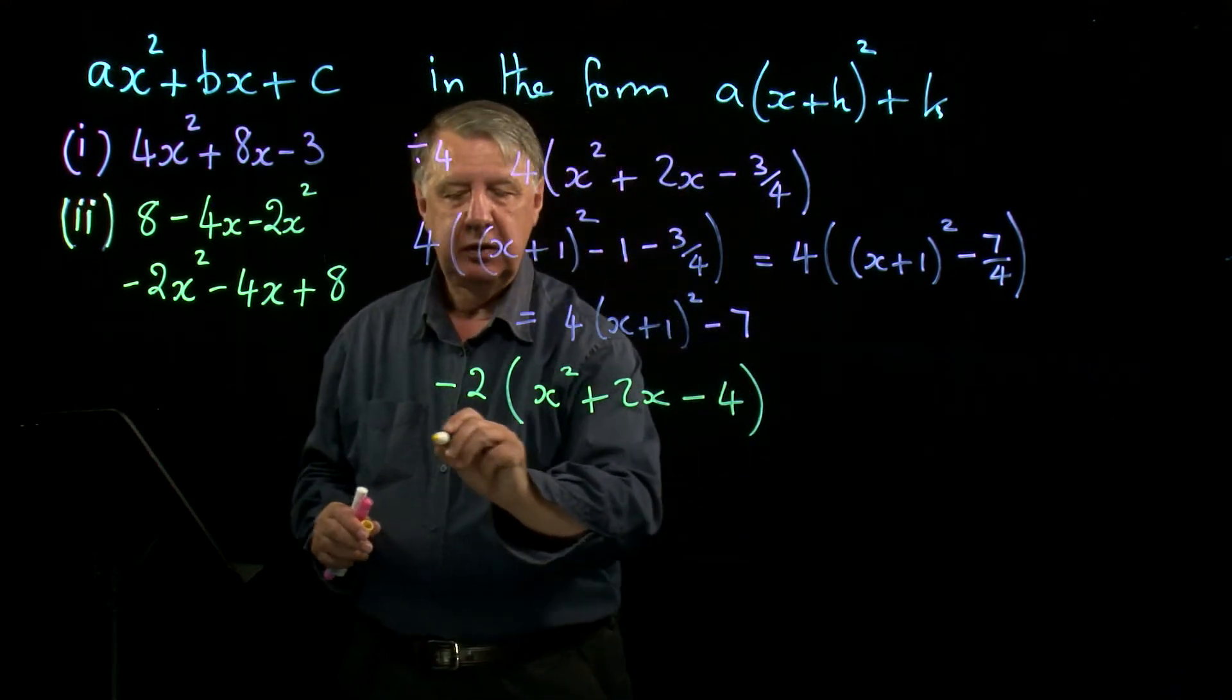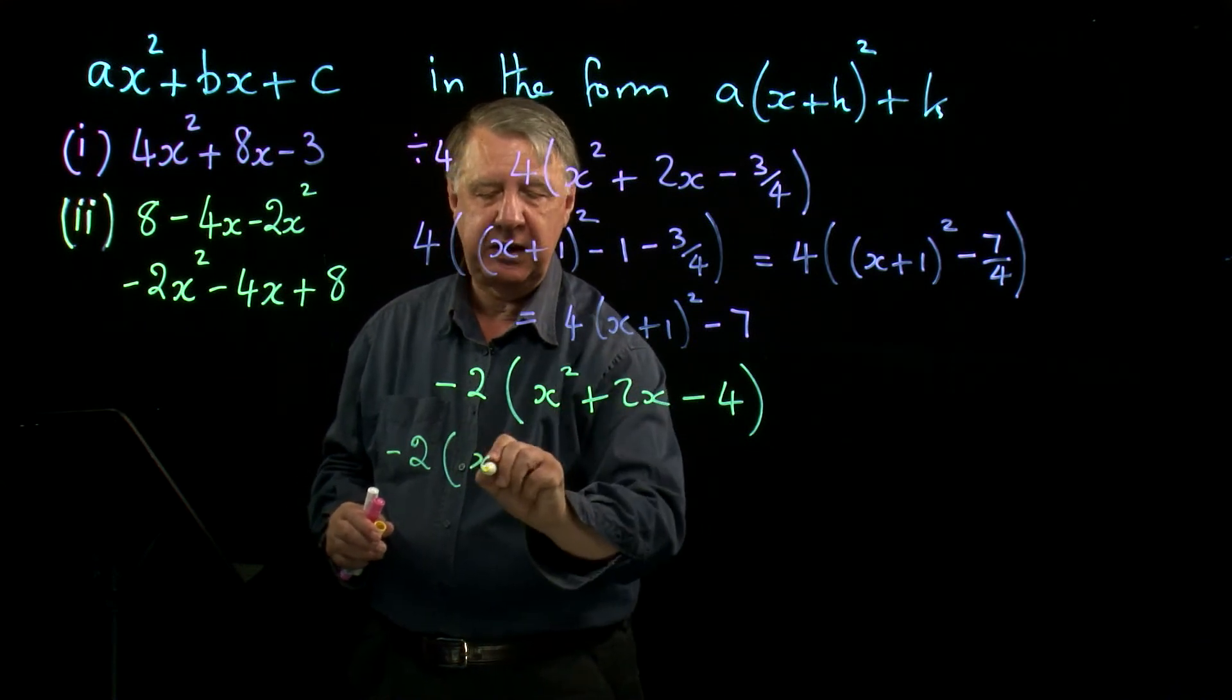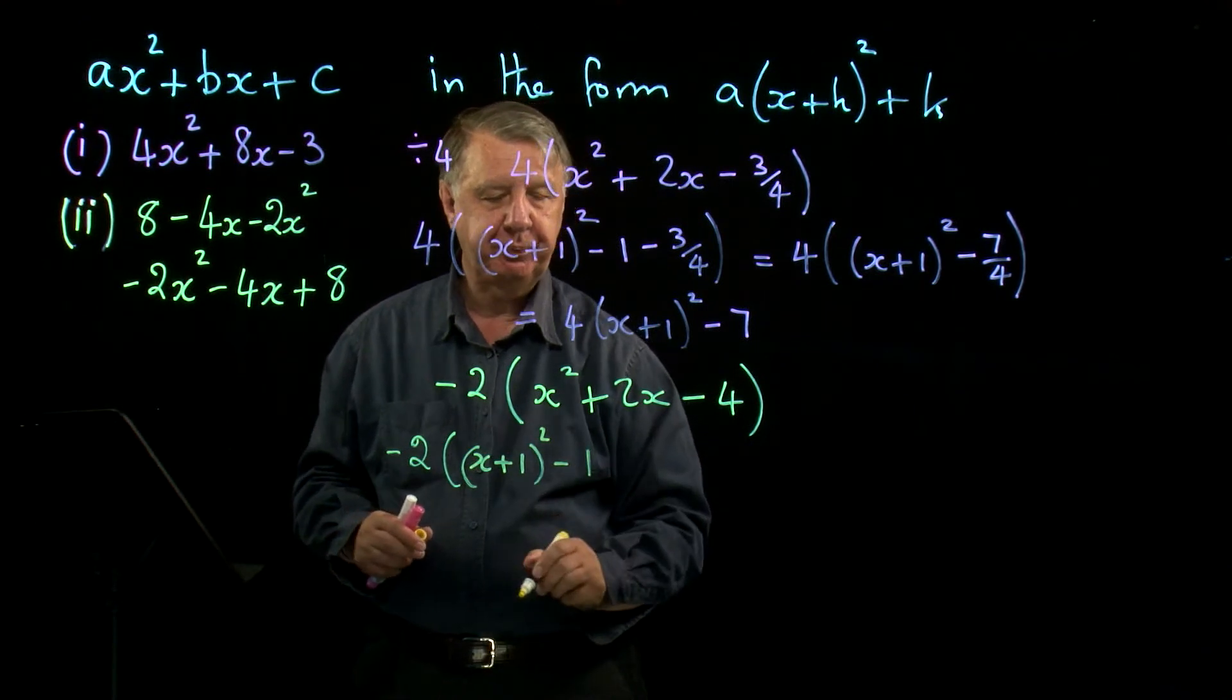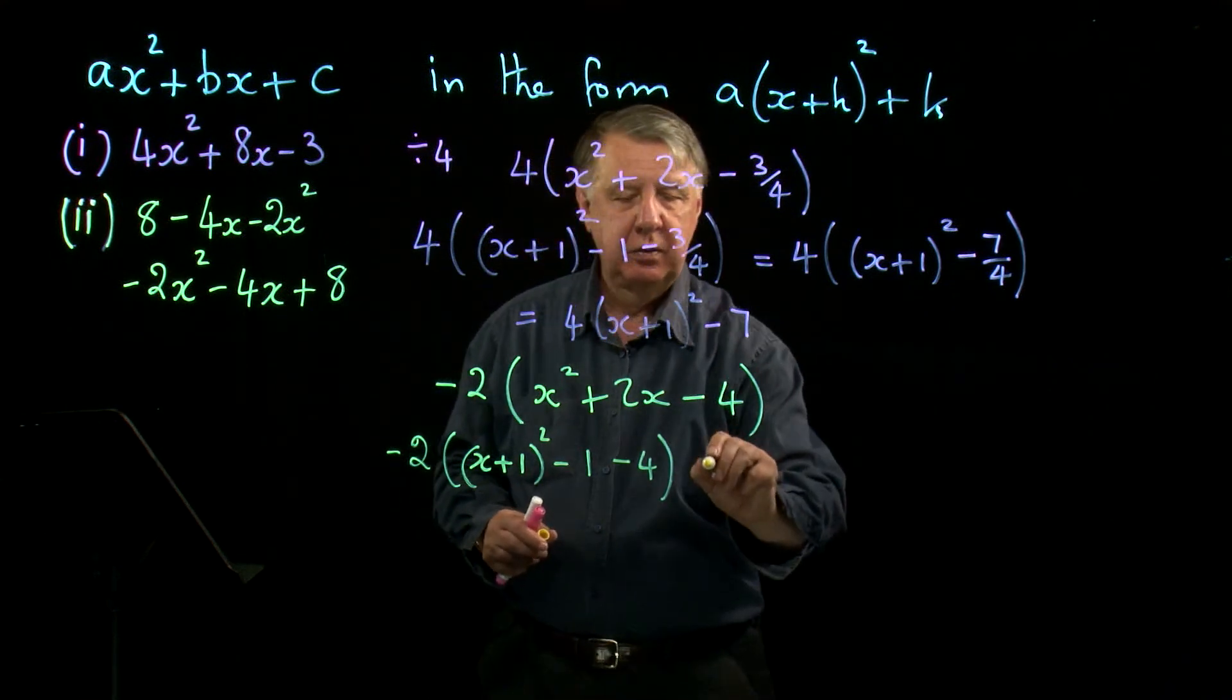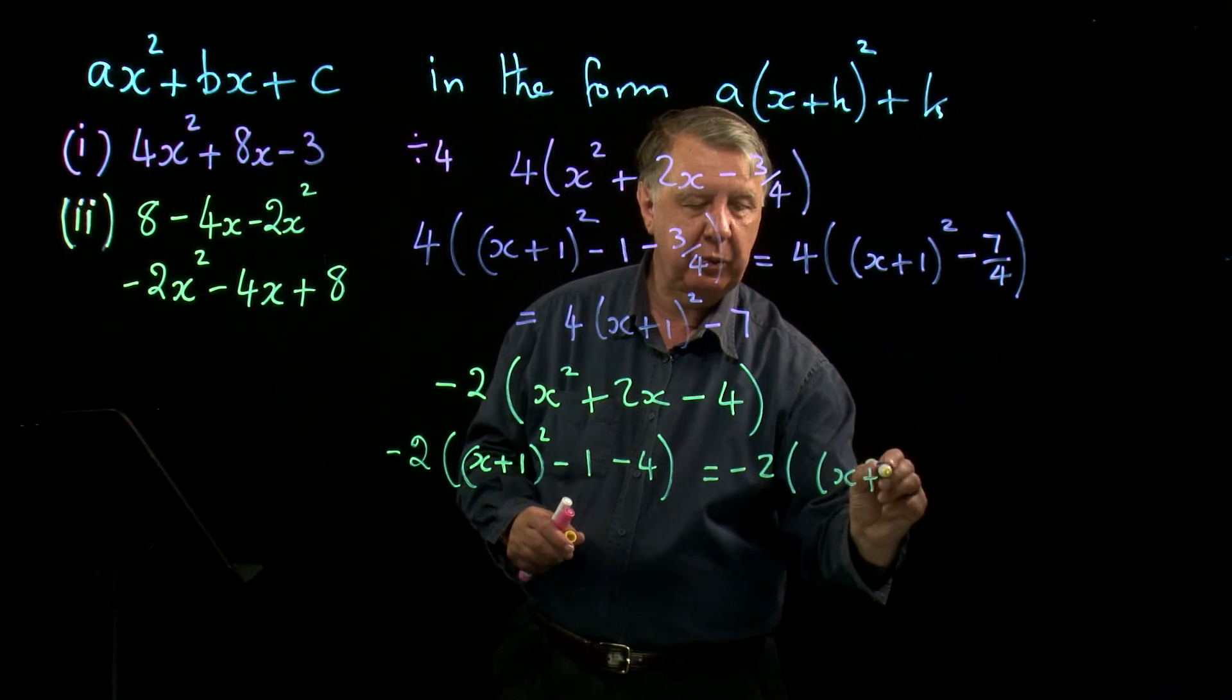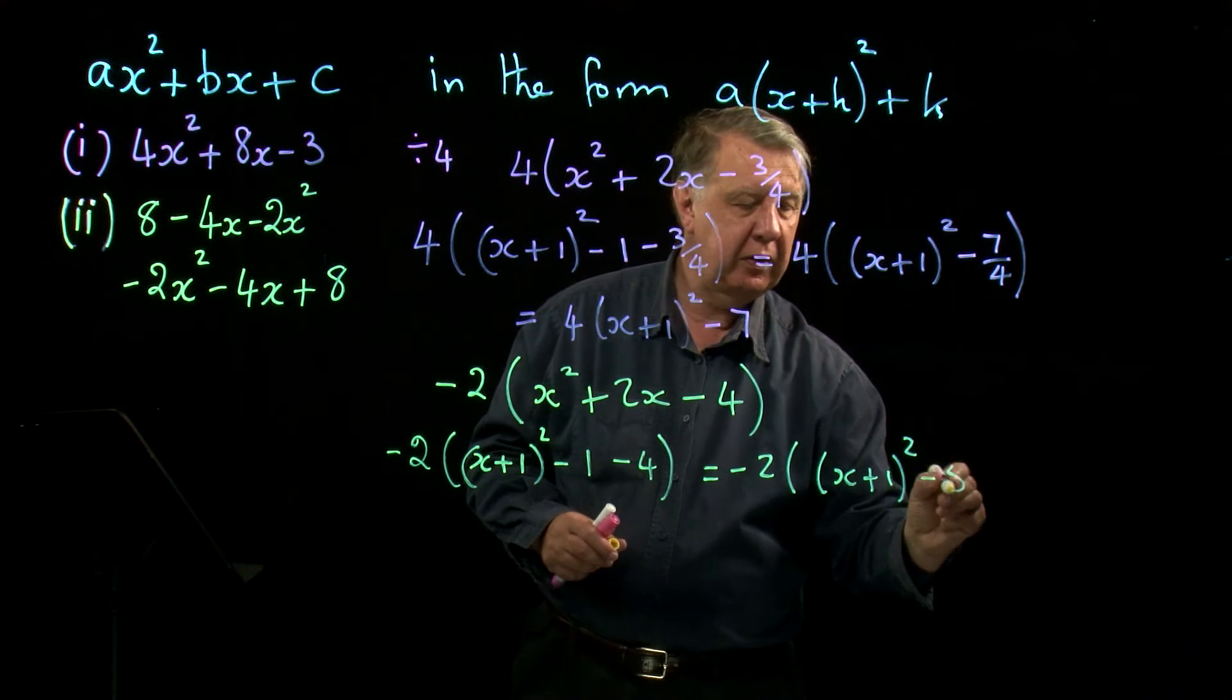It's easy, isn't it? Then I do the same thing with the completing the square. So that's x add one squared, take away one, and negative four is still there, which becomes negative two outside x plus one squared. Negative one take away four is negative five.